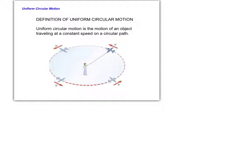The first question we have to ask is: how do we describe the speed, labeled here as red vector v? The speed is tangential, meaning at any point in time, in any split second, if the string that attaches the airplane to the person's hand were to break, the airplane would travel in a straight line tangent to the circle. So it can be called tangential speed or tangential velocity.